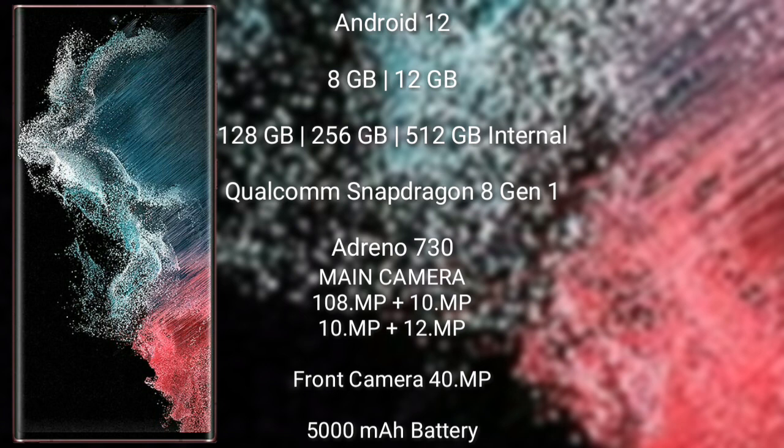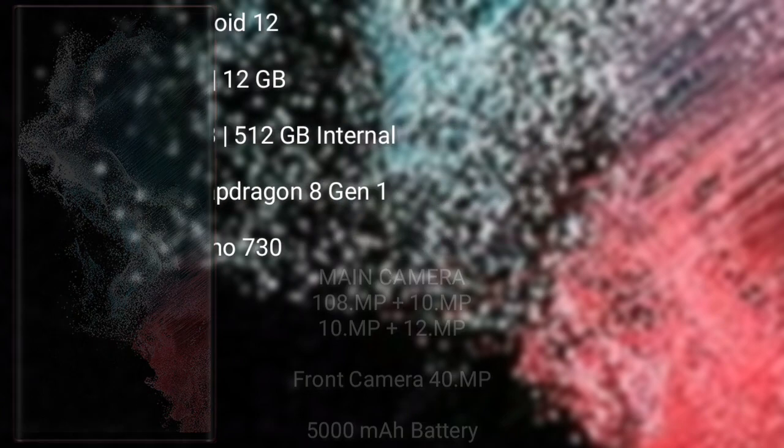The Samsung Galaxy S22 Ultra features a quad rear camera setup of 108 megapixel plus 10 megapixel plus 10 megapixel plus 12 megapixel, a 40 megapixel front camera, a 5000 mAh battery, and 45W fast charging support.